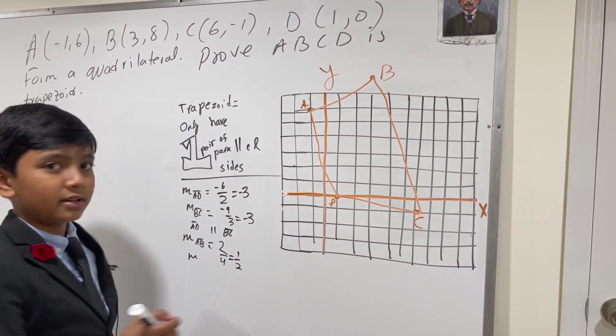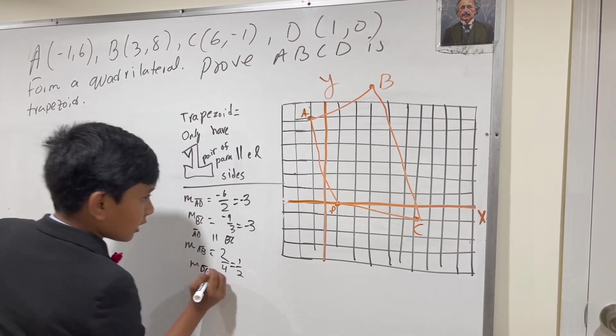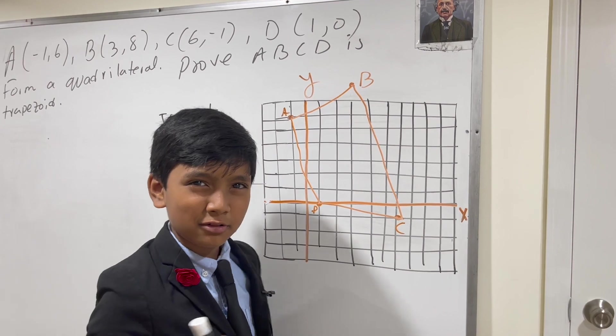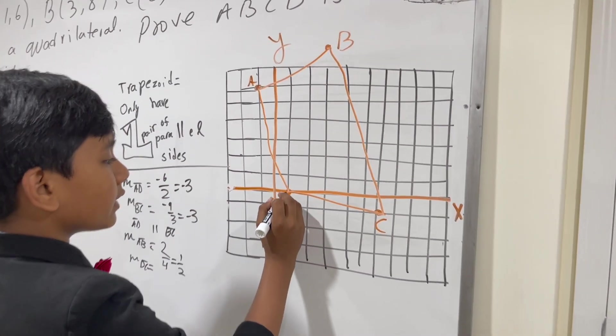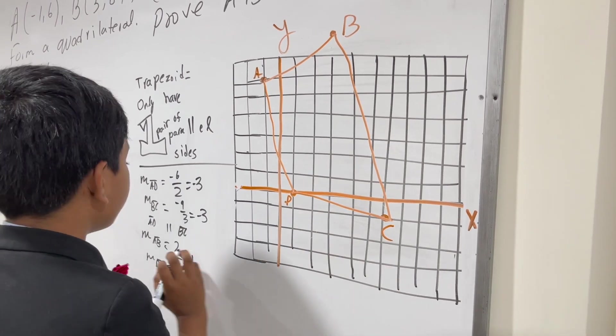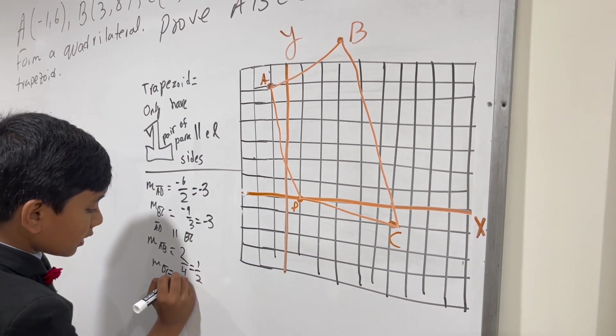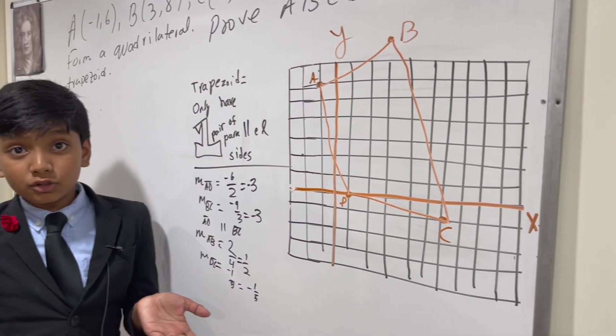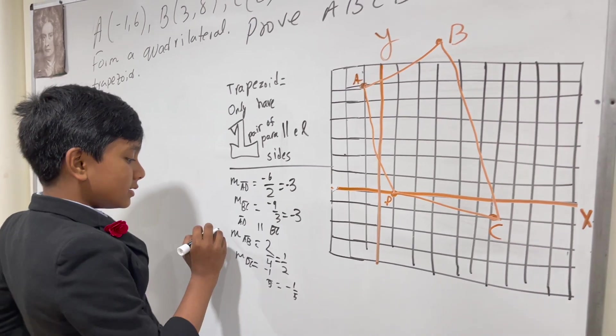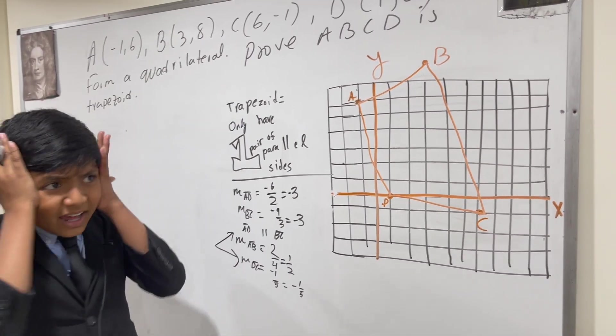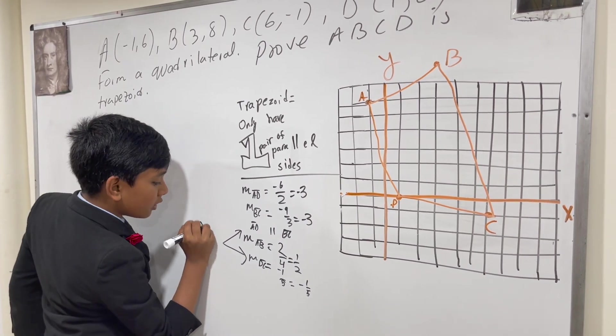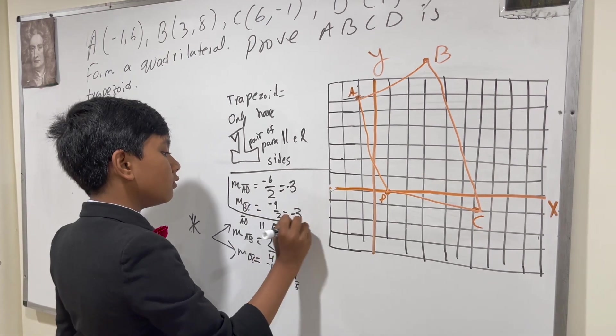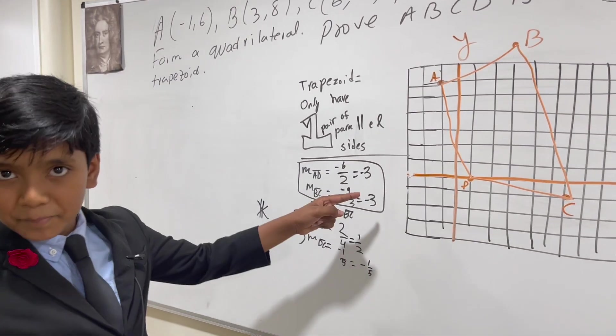However, what about DC? You can infer that its slope is negative just by looking at it, but we have to test it out. So we've got rise negative 1 and run 5. So negative 1 over 5. That gives us negative 1 over 5. What a surprise! So that means these two are inexplicably not parallel, while these two are. So we have proven that this is a trapezoid.